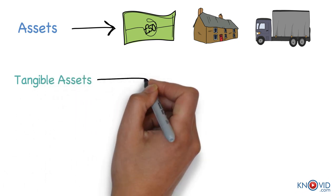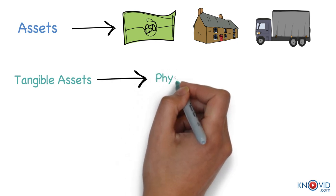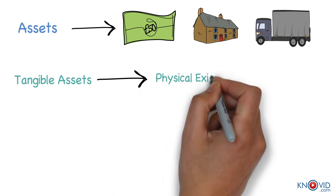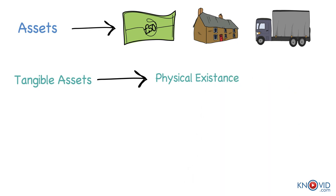Assets can be classified into tangible and intangible assets. Tangible assets are those having a physical existence. It can be seen and touched. For example, plant and machinery, cash, etc. are tangible assets.